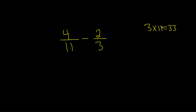That's going to be our common denominator. So now we just have to make the bottom 33 in both of these fractions. Over here we have an 11, so we're missing a 3, so we multiply by 3 over 3. Then here we're missing an 11, so we multiply by 11 over 11.